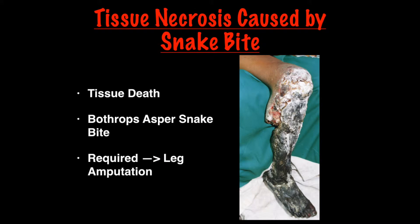Tissue necrosis is a medical term for tissue death. In this picture, severe tissue necrosis occurred following a Bothrops asper snake bite. This leg ended up needing to be amputated above the knee. This is from an 11-year-old boy who was bitten two weeks earlier and was only treated with antibiotics. Typically, a venomous snake bite should be treated with an anti-venom specific for the type of snake that inflicted the wound.